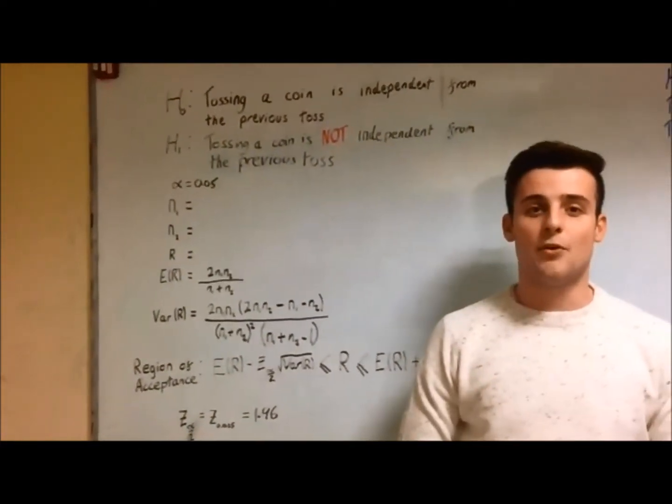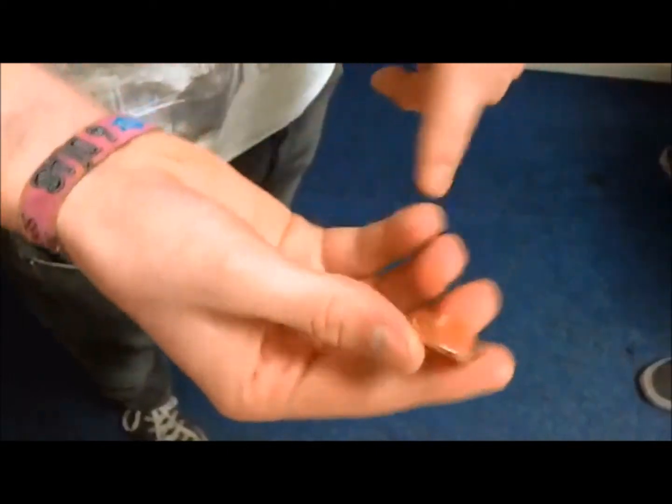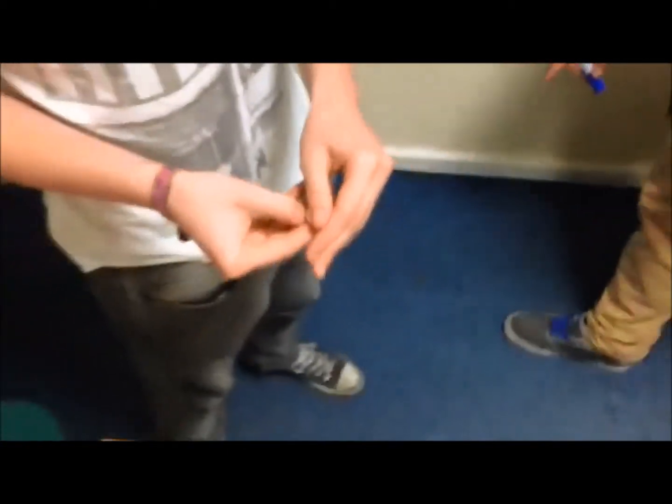Firstly, we are going to carry out flipping a coin 30 times. This is a fair coin, tails on this side, heads on this side. Heads.